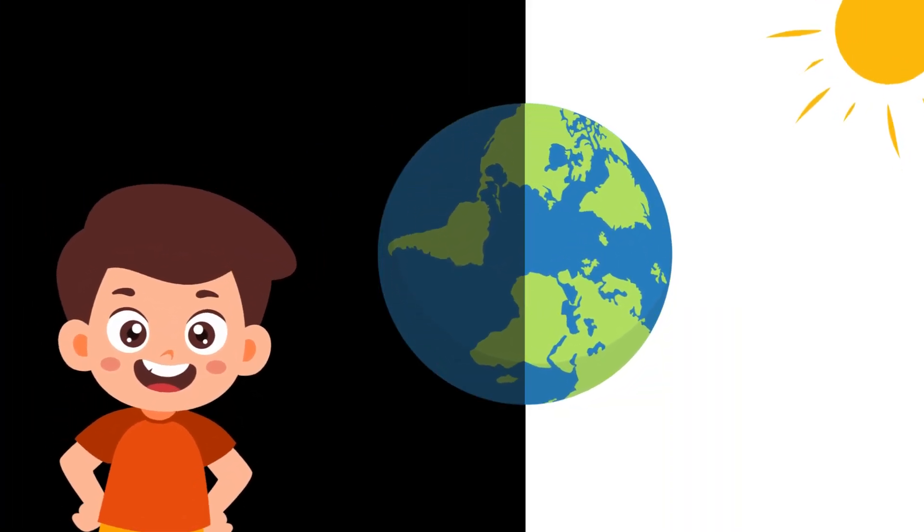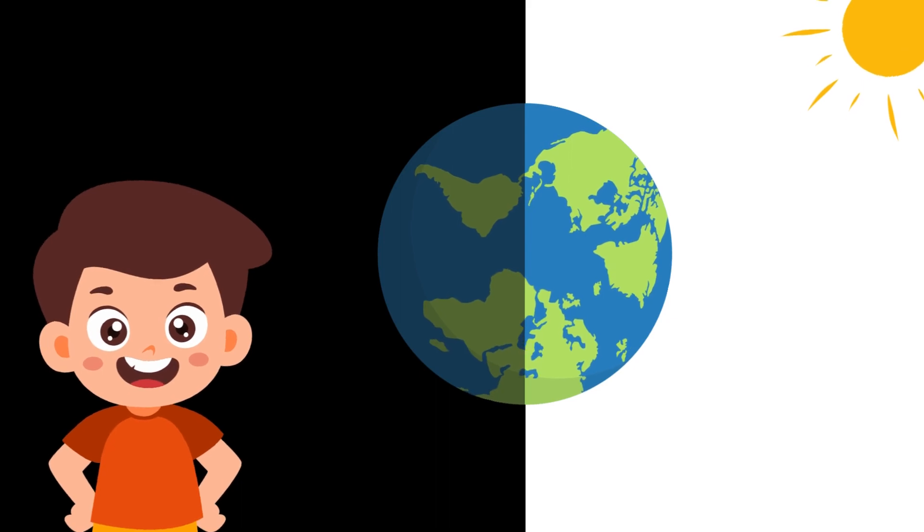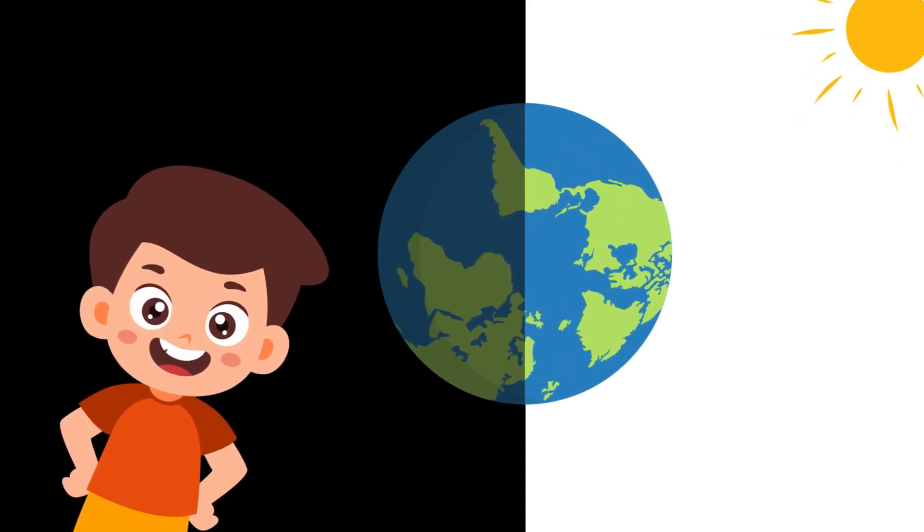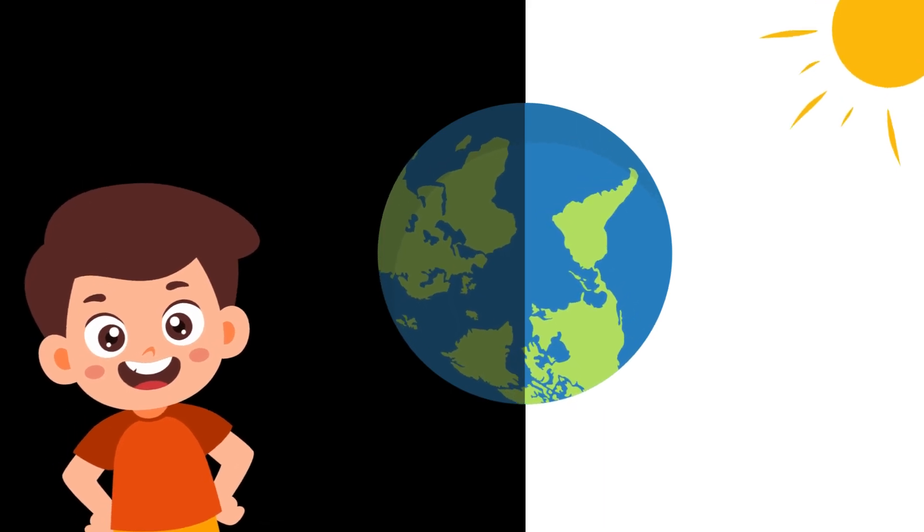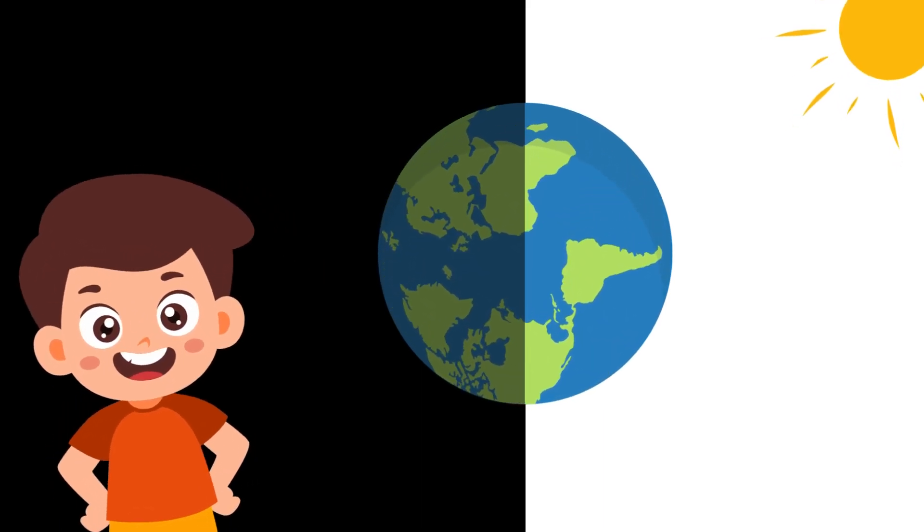Earth's Daily Spin. Earth loves to twirl, and it's quite the dancer. It takes about 24 hours to complete one full spin. As it spins, different parts of it face the Sun at different times.